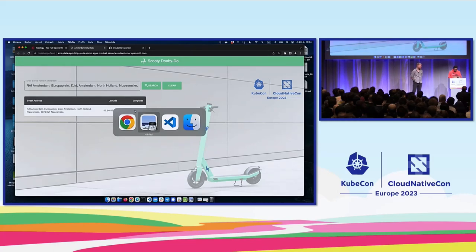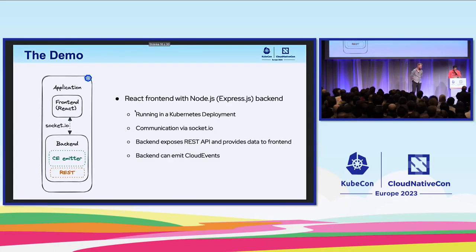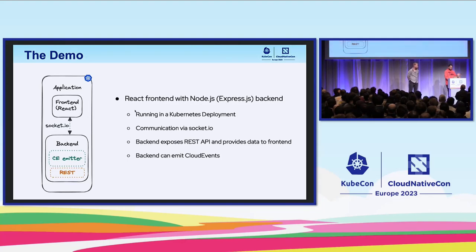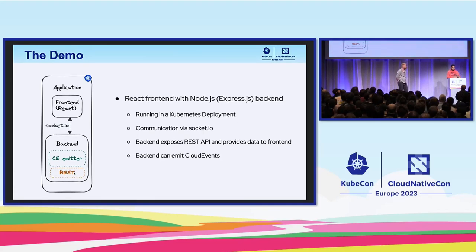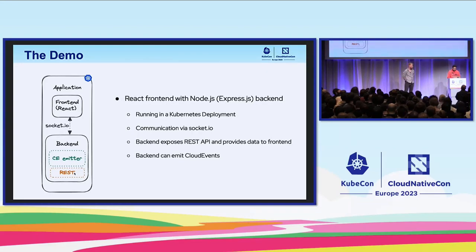In this demo we already have a React application with a Node.js backend running in a Kubernetes deployment — currently OpenShift on AWS, but it will seamlessly work on any Kubernetes platform. The frontend communicates via Socket.IO with the backend on Node, using a CloudEvent emitter and REST APIs to send data for a given street's latitude and longitude, with weather data coming from the functions we have.